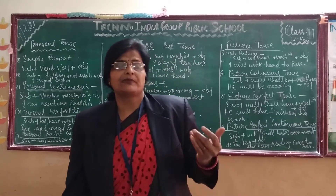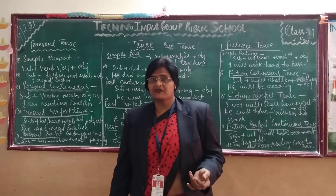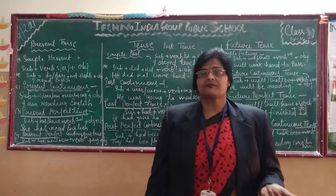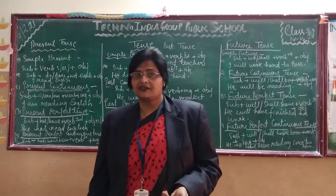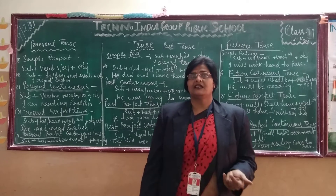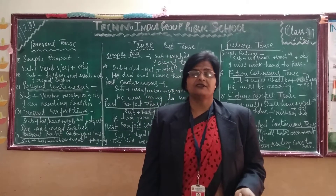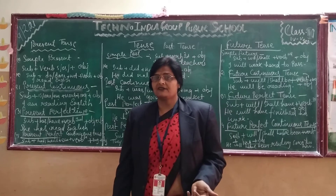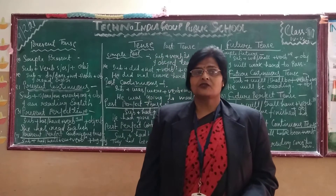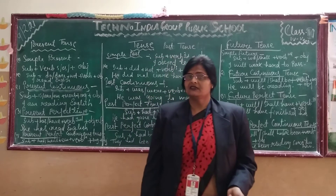First is simple present, simple past, and simple future. Second is present continuous, past continuous, and future continuous. Third is present perfect, past perfect, and future perfect. And fourth is present perfect continuous tense, past perfect continuous tense, and future perfect continuous tense. So tense has four forms — total there are twelve tenses.